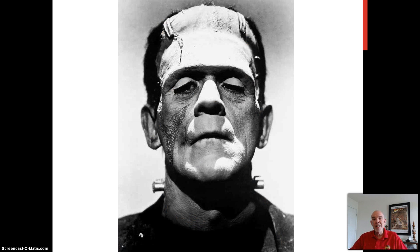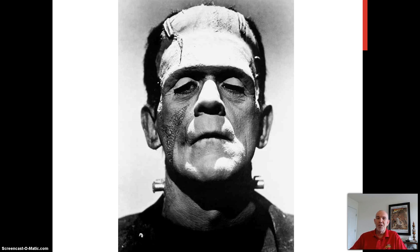The story of Frankenstein and his monster is based on early brain research. While the brain does emit a weak electrical current — think back to the EEG — we know today that it's electrochemically based. Let's explore this electrochemical impulse. It comes in two parts: the resting potential and the action potential.